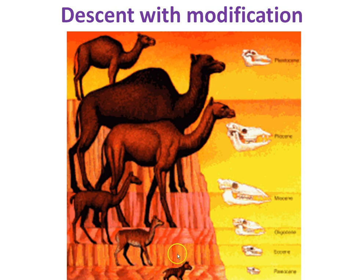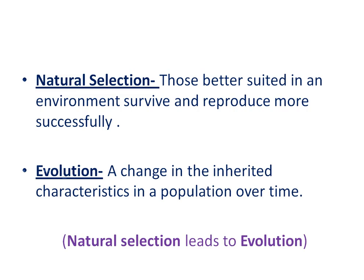Here we have examples of what's found in the fossil layers. We find fossils in sedimentary rock, and in many cases we see selection for size in herbivore animals as a result of being preyed upon. Natural selection means those better suited in an environment survive and reproduce more successfully — interchangeable with survival of the fittest. Evolution is the change in inherited characteristics in a population over time. Natural selection happens to individuals; evolution happens to populations. Natural selection happens first; evolution happens second.